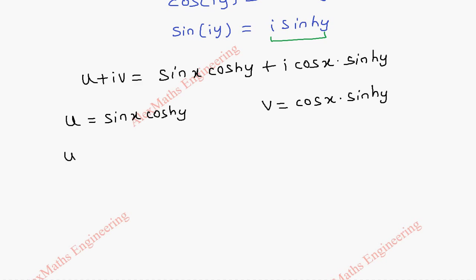Now equating real parts on both sides, we get u equal to sin x cosh(y), and equating imaginary part, we get v equal to cos x into sinh(y). Now we are going to find the partial derivative u_x, that is the partial derivative of u with respect to x. It means y is treated as a constant. Sin x differentiation is cos x, and cosh(y) stays as it is. Now we find u_y, the partial derivative of u with respect to y. It means x is treated as a constant, so sin x is constant. cosh(y) differentiation is sinh(y).